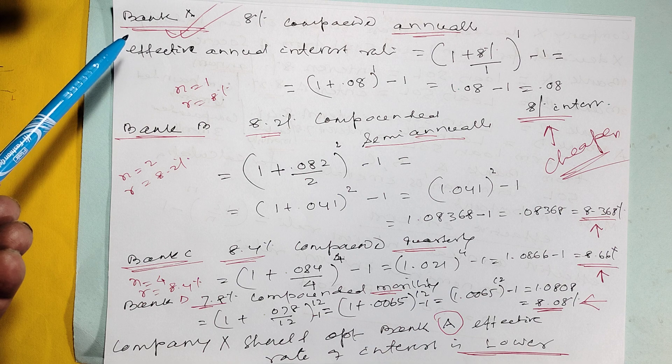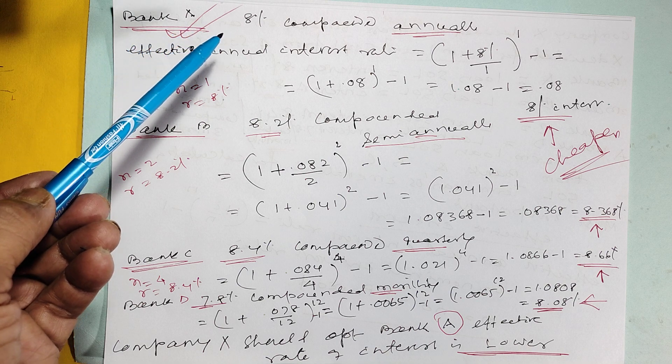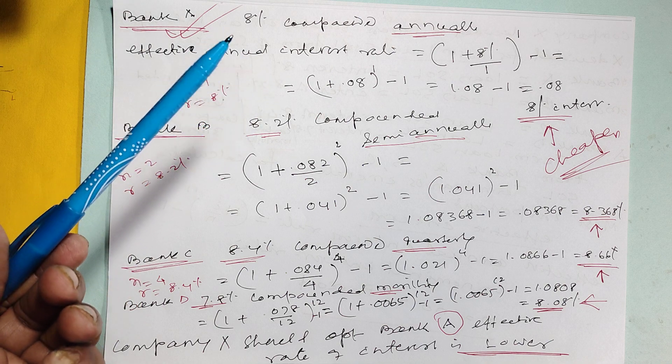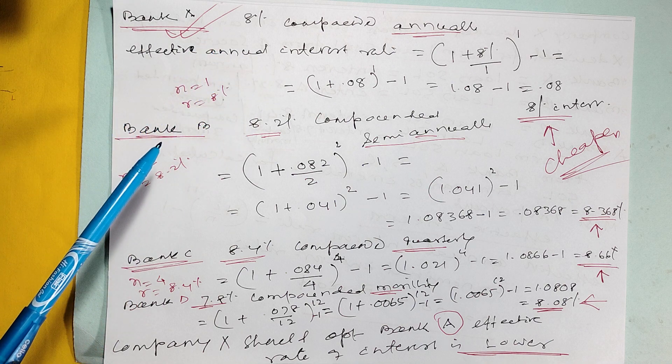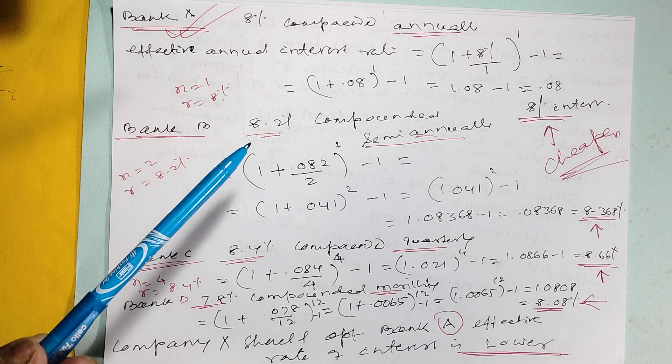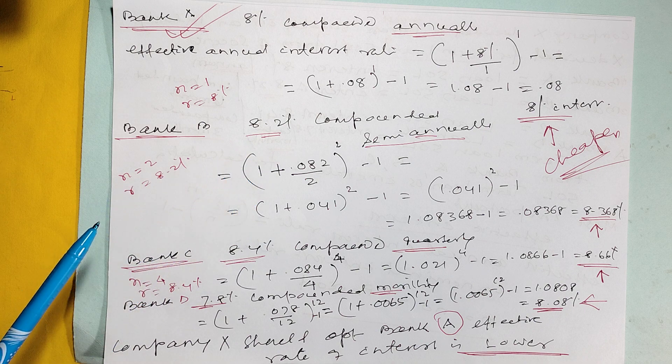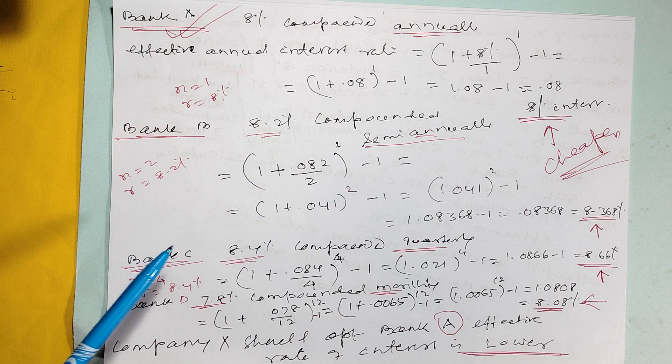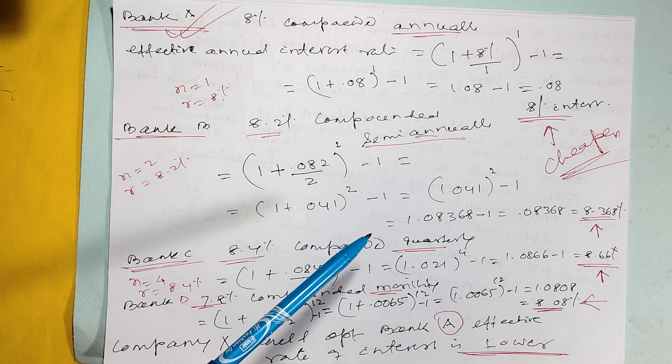Here, Bank A, 8 percent compounded annually, it is coming same thing 8 percent. Bank B, 8.2 percent compounded semi-annually, it is coming 8.36 effective interest. Bank C, 8.4 percent compounded quarterly, it is effective interest coming 8.66 percent.